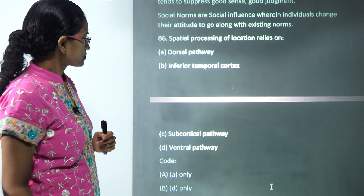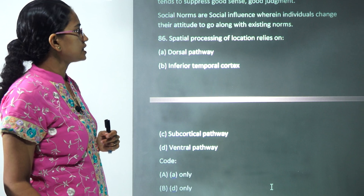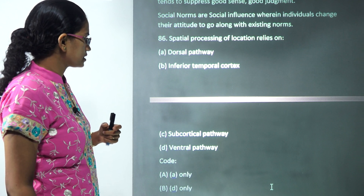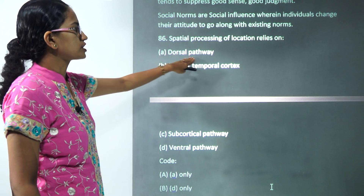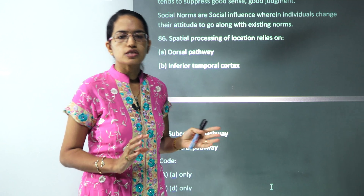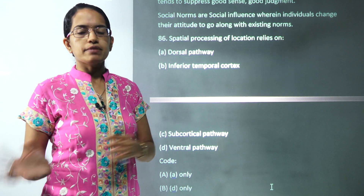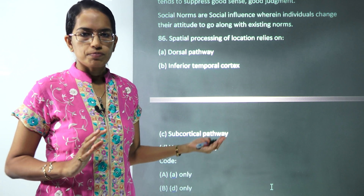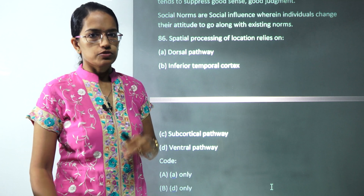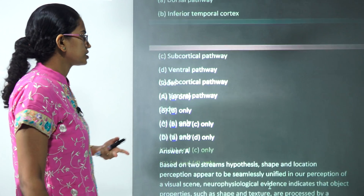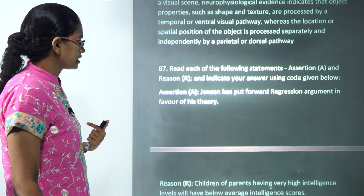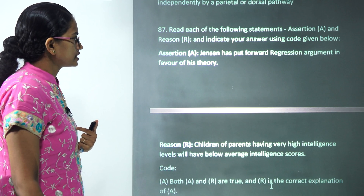The next question states that spatial processing of location is governed by the dorsal pathway. This is again part of the two-stream hypothesis — the 'where' and 'what' pathways. This was the second question from two-stream hypothesis, and that's the correct answer.